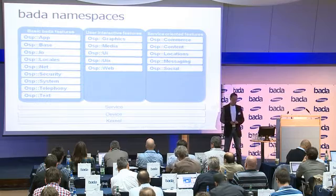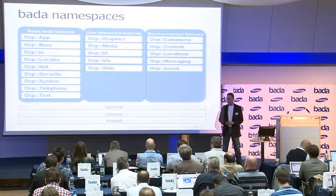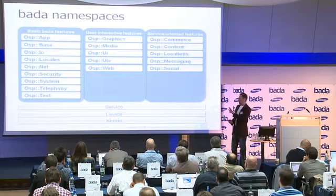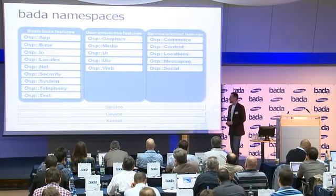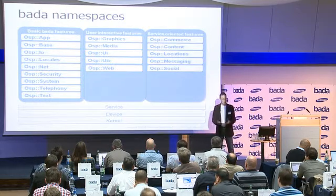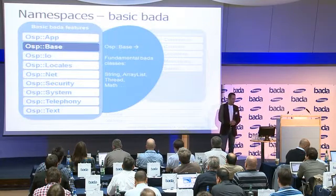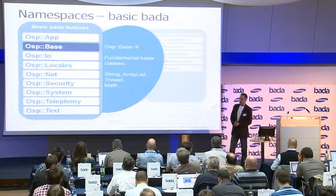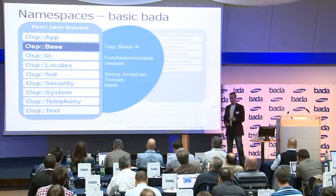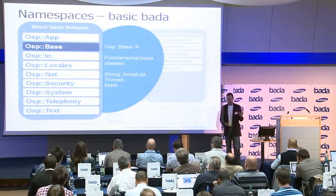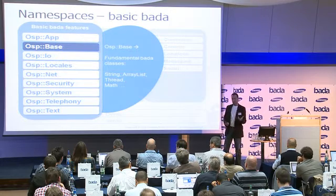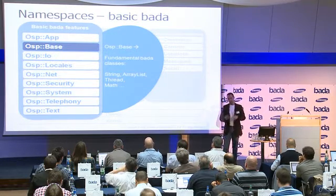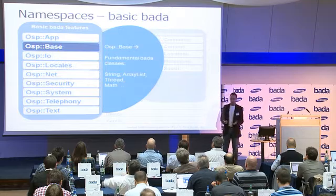I do not want to go into all the namespaces in detail — just to pick out some as examples. Most of them are pretty obvious and straightforward. For instance, there is the base namespace that covers all the basic functionality: things like string classes, integer, array lists, hash maps, threads, monitors, and math — so everything you would consider as basic functionality.